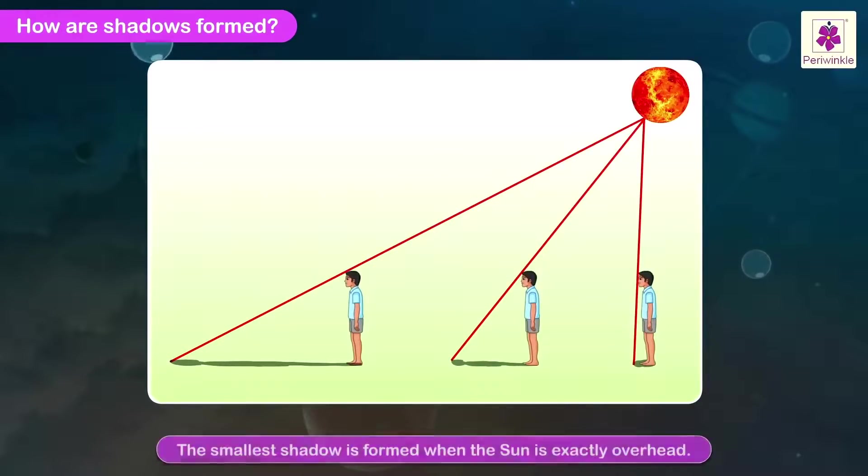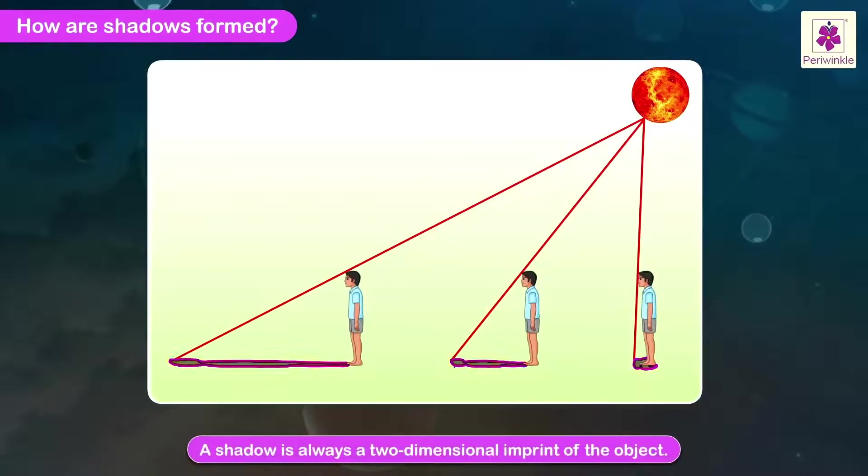We observe that the smallest shadow is formed when the Sun is exactly overhead. A shadow is always a two-dimensional imprint of the object.